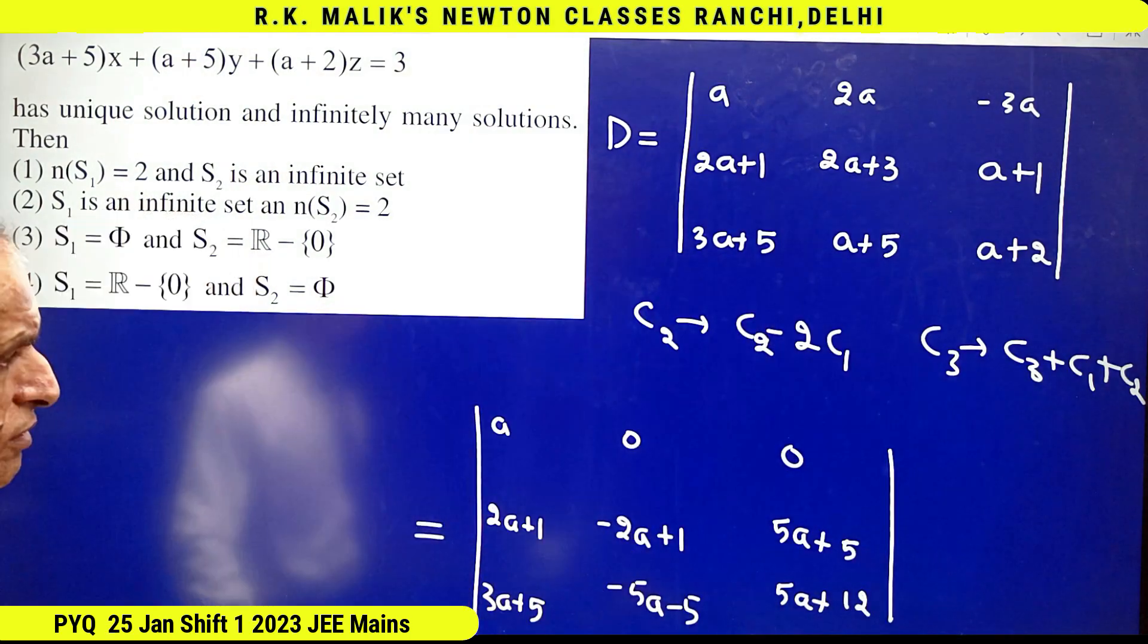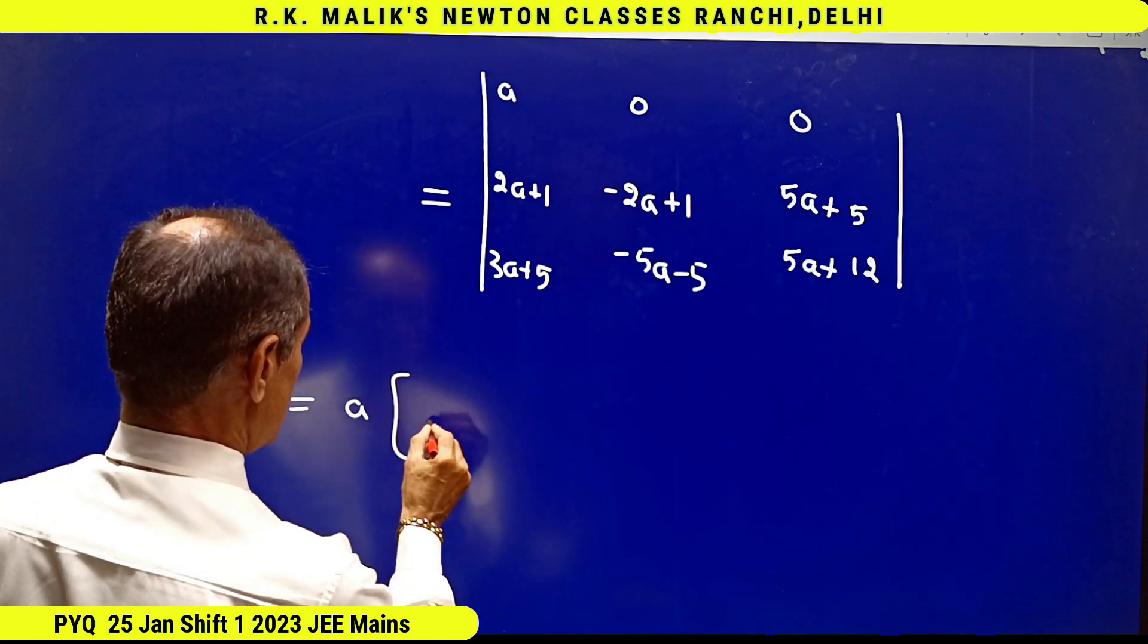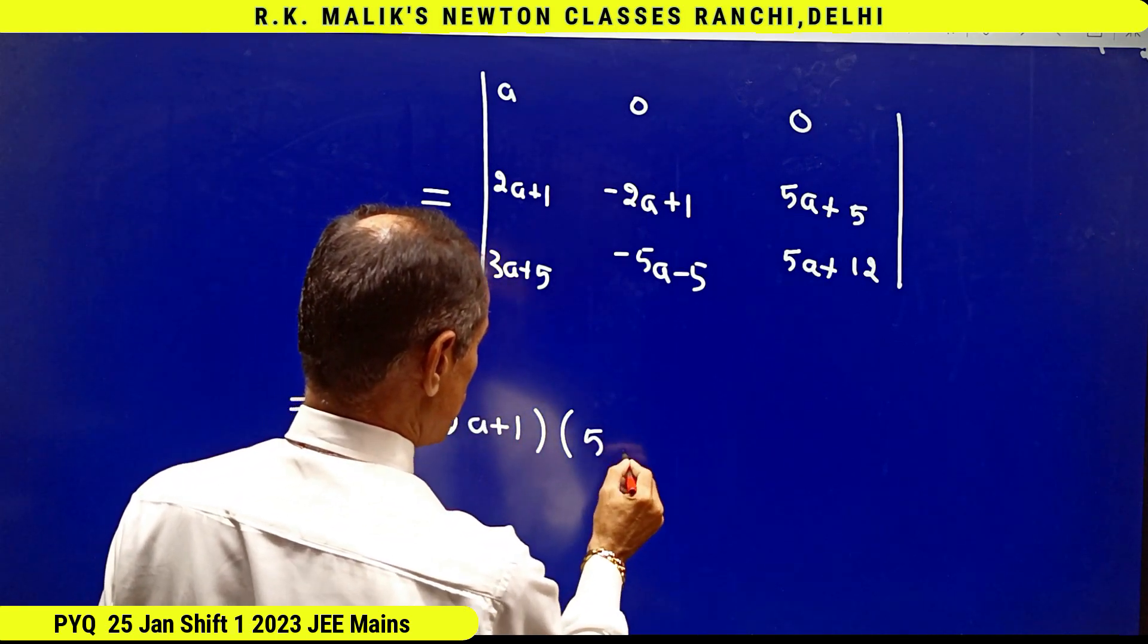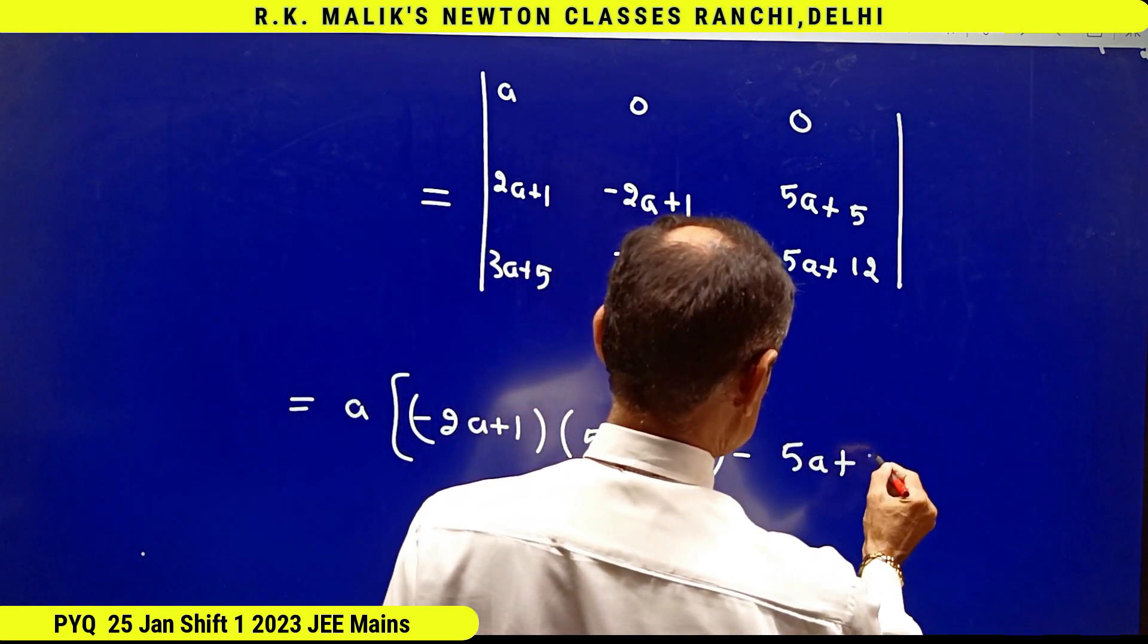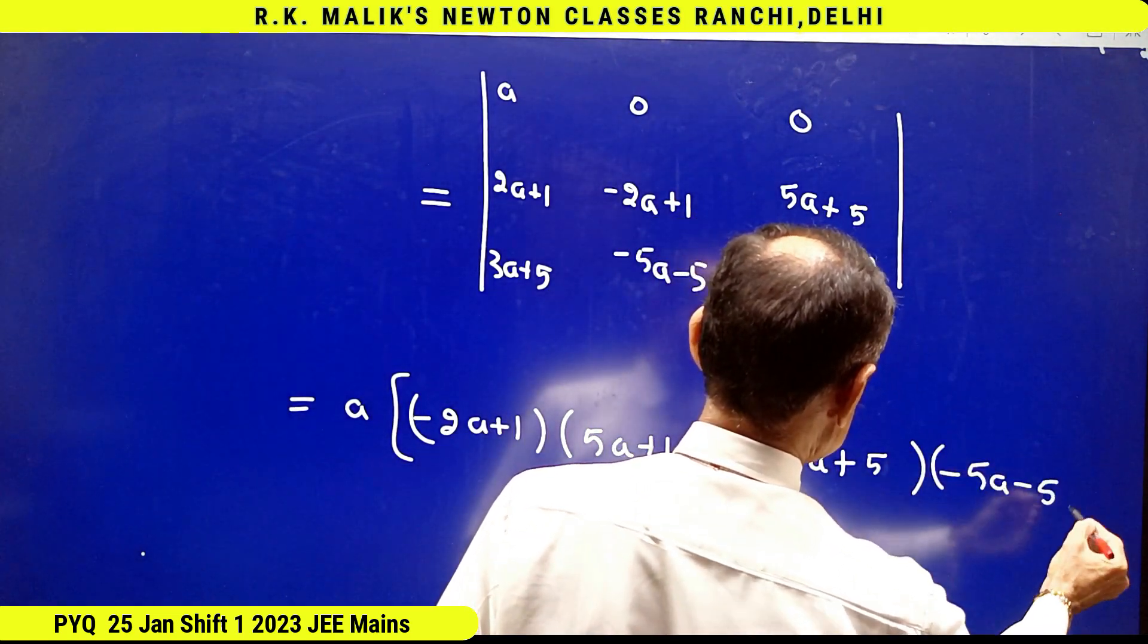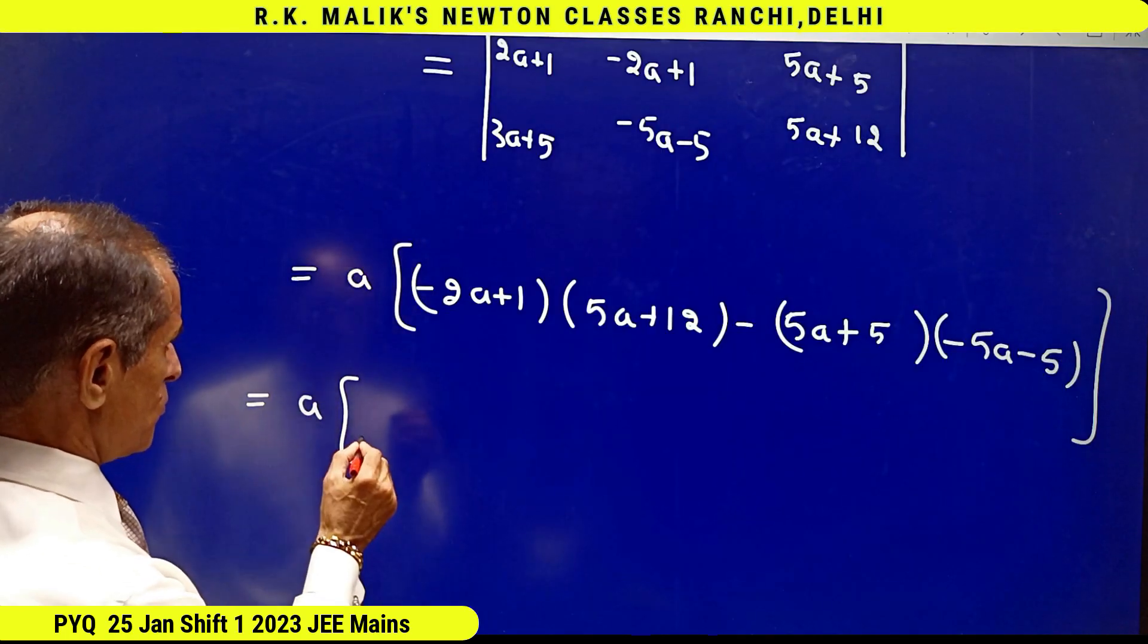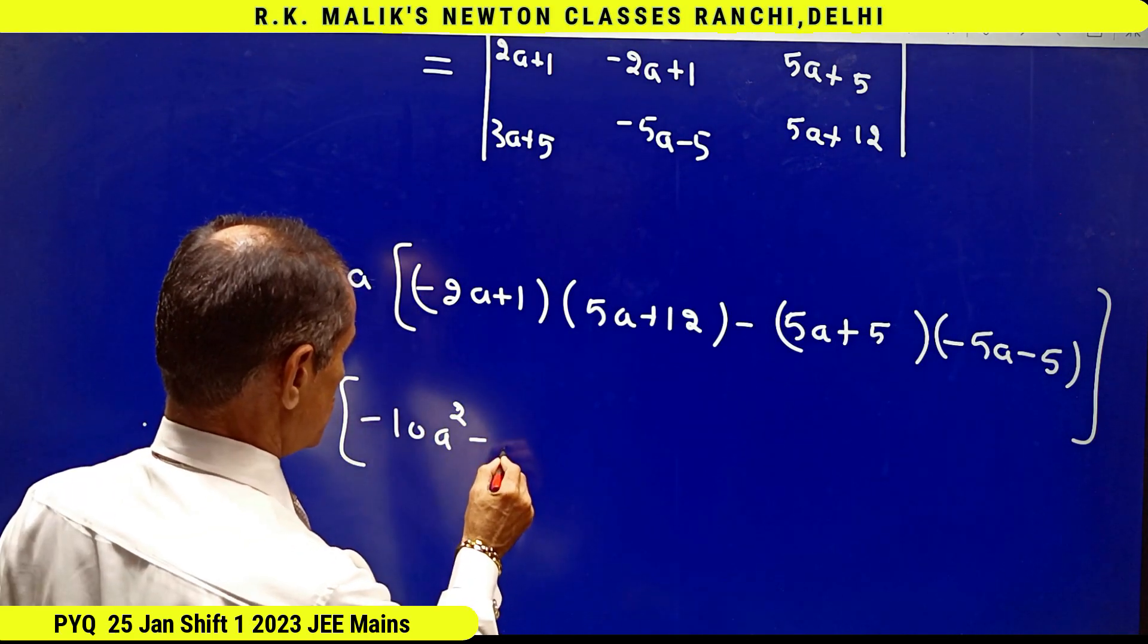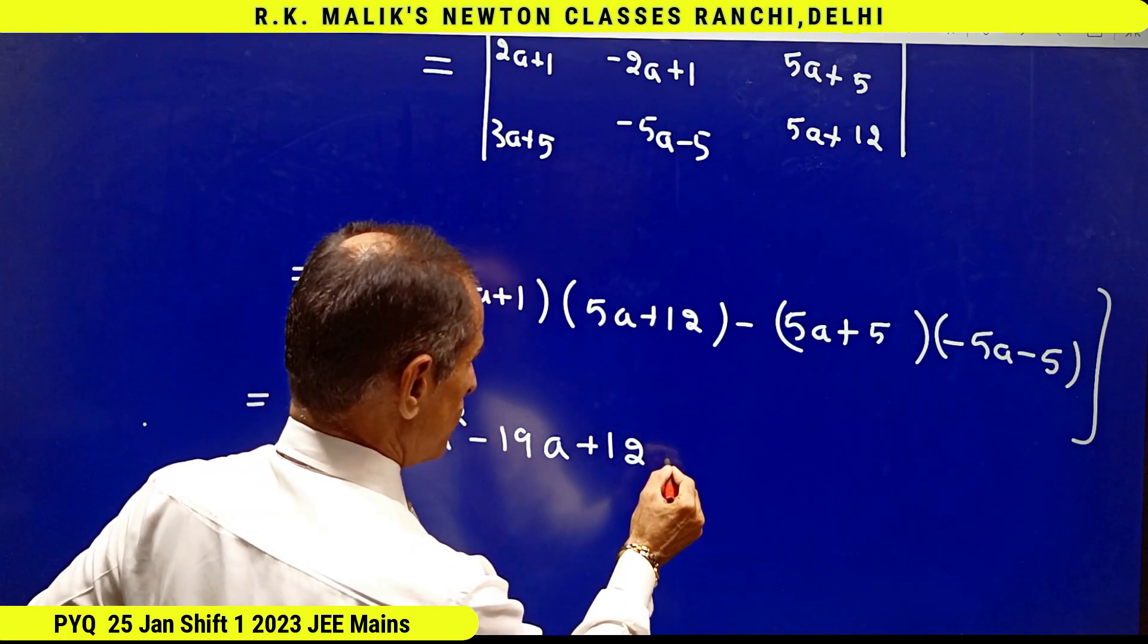This is D. This is equal to a into (minus 2a+1)(5a+12) minus (5a+5)(5a+5). That is equal to a into minus 10a² minus 19a plus 12 plus 25a² plus 25 plus 50a.